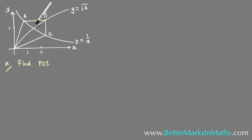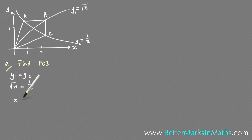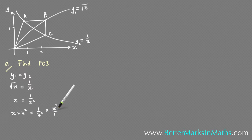To find the intersection, set y1 equal to y2 and solve for x. So the square root of x equals 1 on x. Squaring both sides gives x equals 1 on x squared. Multiplying both sides by x squared gives x cubed equals 1, and cube rooting both sides gives x equals 1.